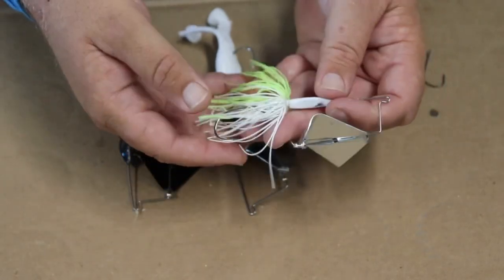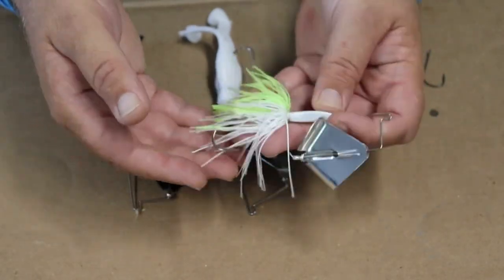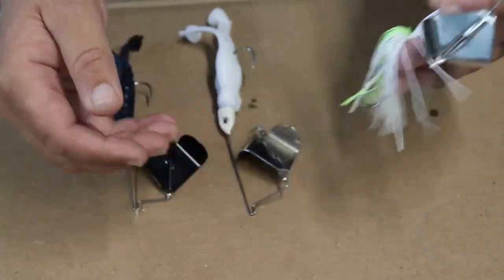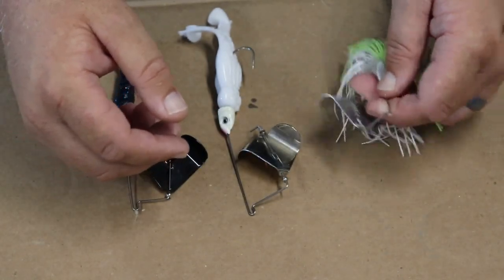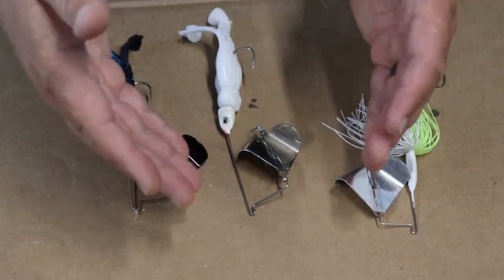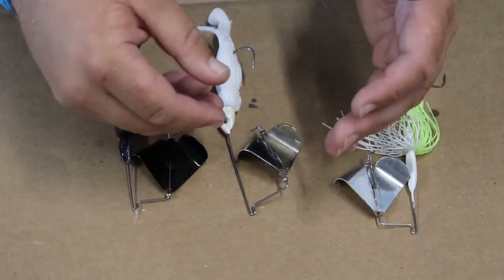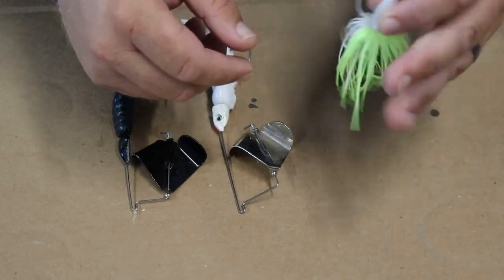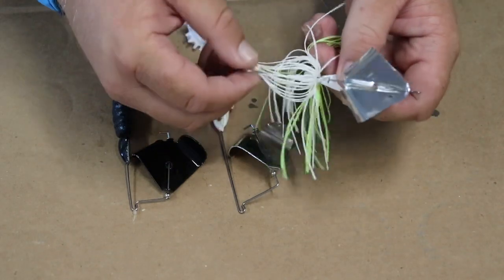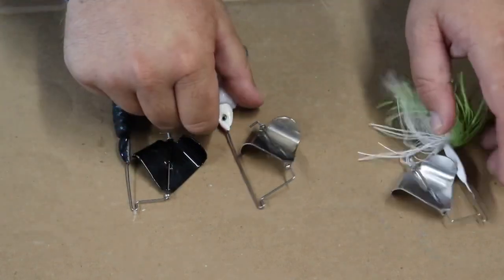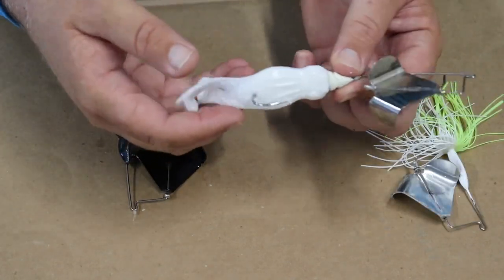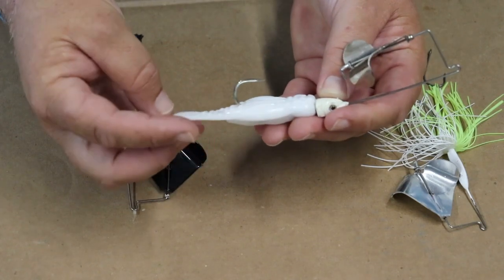There's a lot of different things you could do to customize the traditional buzzbait. But in recent years, I think we've found a better way for a lot of different situations for fishing a buzzbait. And that is by taking the skirt completely off of the stock buzzbait that you get in the package and replacing that with a toad style bait.